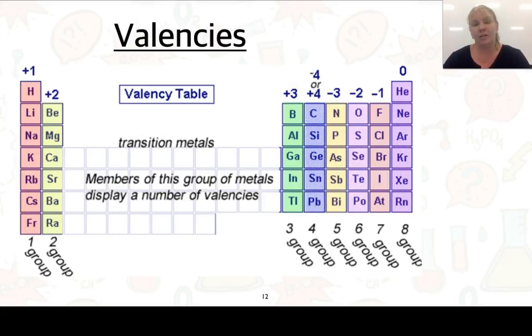Here's some numbers that you can now add to your periodic table. We've got group 1, group 2 heading down. The valency of group 1 is +1, +2, +3. Here we see we get a -4 or +4, -3, -2, -1, and 0. So you can add those onto your periodic table as well.